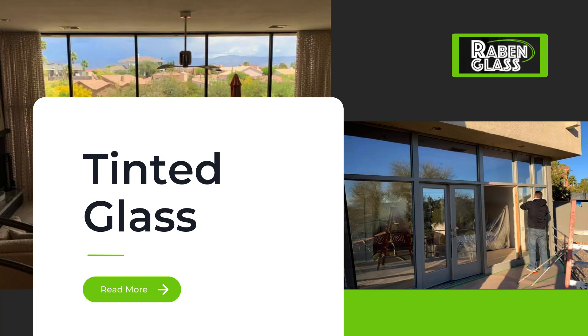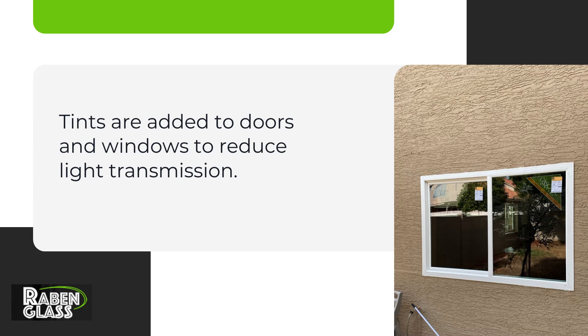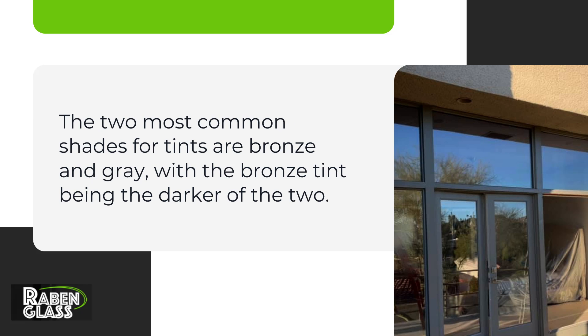Tinted Glass. Tints are added to doors and windows to reduce light transmission. The two most common shades for tints are bronze and gray, with the bronze tint being the darker of the two.